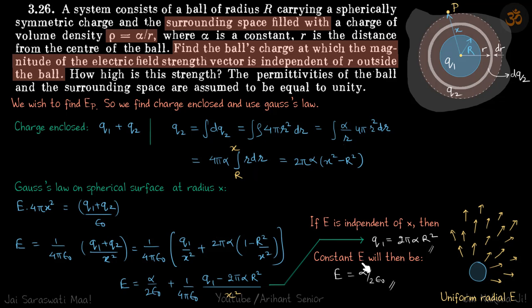The value of electric field will then be constant and its value should be α by 2ε₀. Now in this question, it's good to visualize also how this constant radial electric field will look like. It's going to look like this.